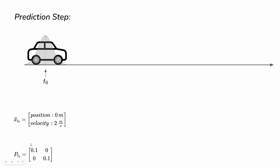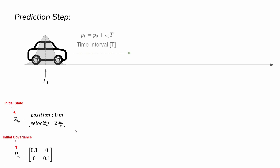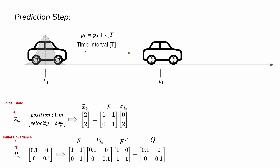The state covariance is diagonal here, which means that at this time instance there is no correlation between the states known yet. So this is the initial state and this is the initial covariance.